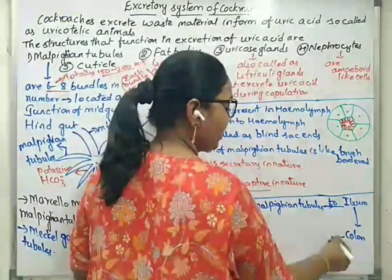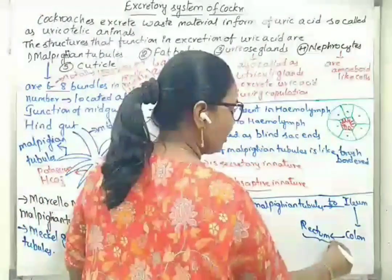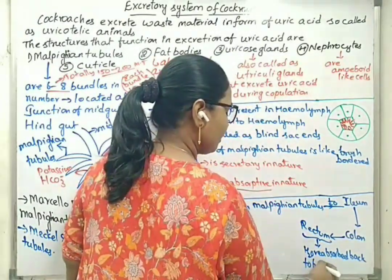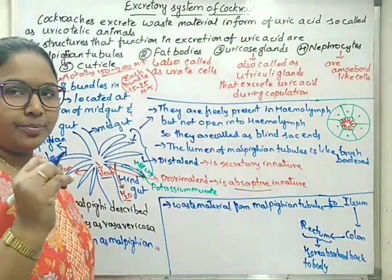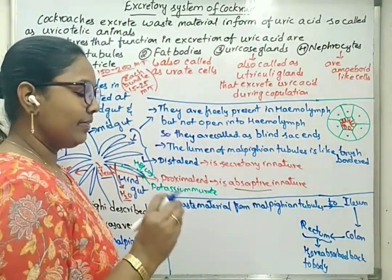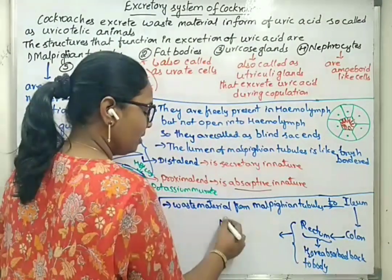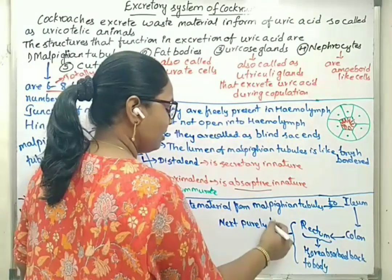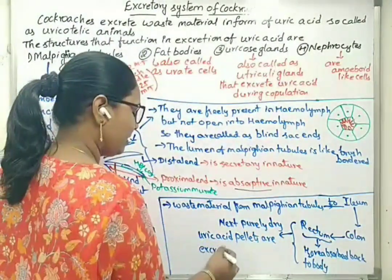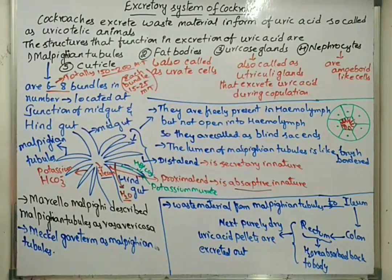Water is absorbed from the colon to the rectum. Most of the water present in the waste material is reabsorbed back to the body. As a result, the waste material becomes purely dry uric acid pellets ready for excretion. At the rectum region there is maximum conservation of water back to the body, and finally dry uric acid pellets are excreted out. These are the important points related to Malpighian tubules.